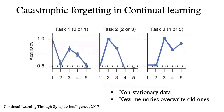The biggest challenge in continual learning is the catastrophic forgetting problem. As shown in this figure, there are five tasks. The accuracy of task 1 is close to 1 when we train the model on the first task. However, it suddenly drops to 0.5 when we train on the second task.